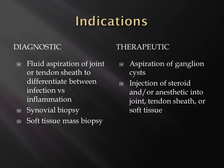Generally in the wrist and forearm, as with anywhere in the musculoskeletal system, we're going to have indications either to be diagnostic or therapeutic. Fluid aspiration of a joint or tendon sheath is a common indication for a diagnostic ultrasound-guided procedure, either to evaluate for infection or inflammation. Also for diagnostic purposes: synovial biopsy or soft tissue mass biopsy. Most of what we do at Travis are therapeutic injections — either aspiration of ganglion cysts or injections of steroid or anesthetic medicine into a joint, tendon sheath, or potentially into the soft tissues.